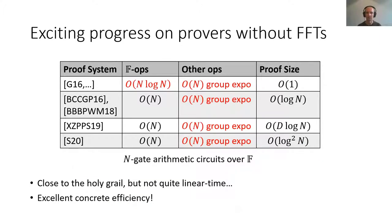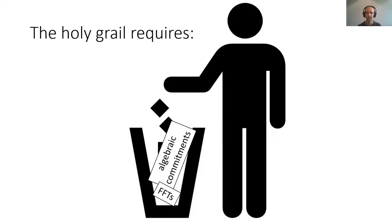Lots of exciting existing works which achieve excellent concrete efficiency actually fail to achieve the linear time goal outlined above, because they either use fast Fourier transforms or algebraic commitments. Many of these works have eliminated the fast Fourier transform from their cryptographic arguments, but they still use algebraic commitments and still incur a linear number of group exponentiations. In order to achieve this holy grail, we'll need to drop the use of algebraic commitments and fast Fourier transforms completely.